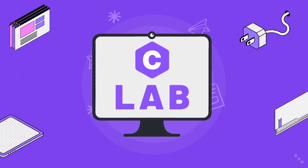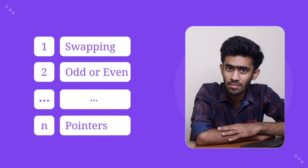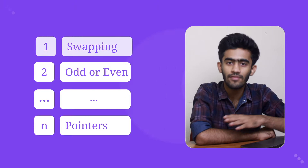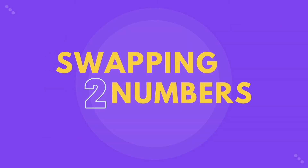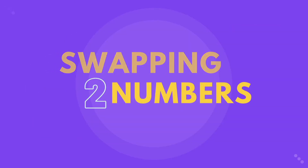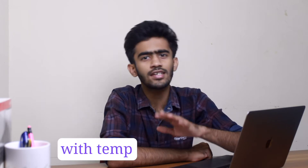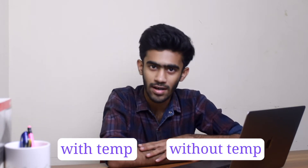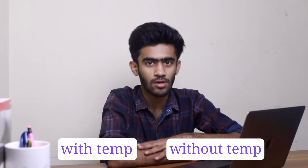Welcome to the CLAB series from Codavo. In this series we will be covering all the CLAB programming questions, right from swapping two numbers all the way up to pointers. Now let's get to the first episode. We have swapping two numbers. There are two methods to solve this problem: the first one is using a temporary variable, and the other without using one. Let's learn both.